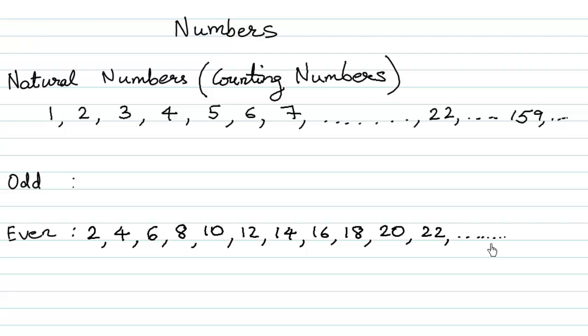While the numbers which do not come in the table of 2, for instance 1, 3, 5, 7, 9, 11, 13, 15, 17, 19, etc., are said to be odd numbers.